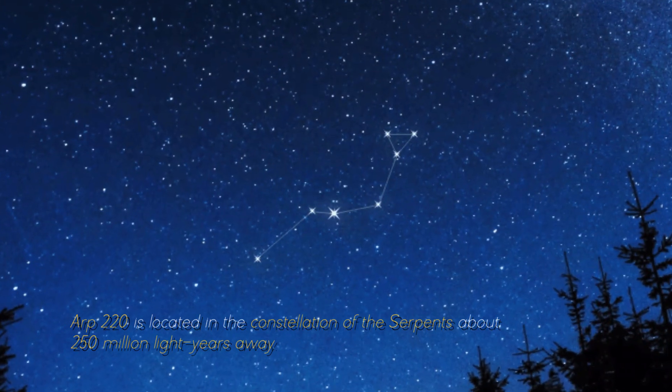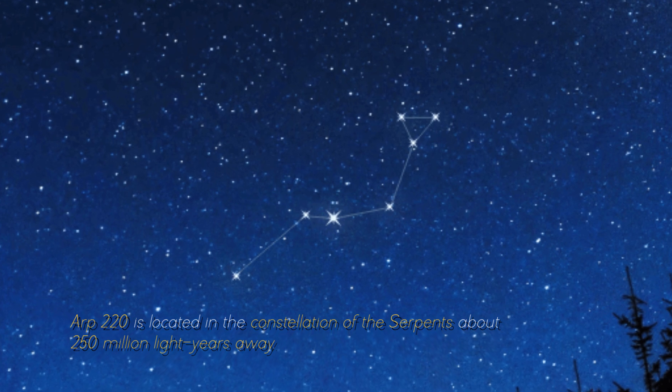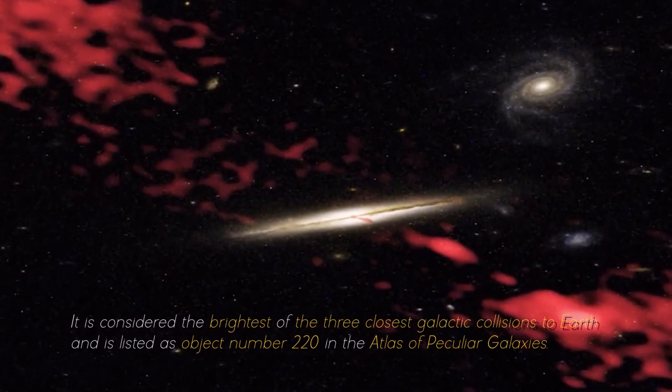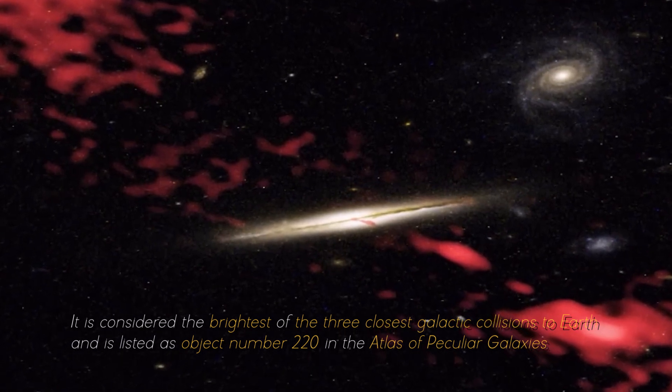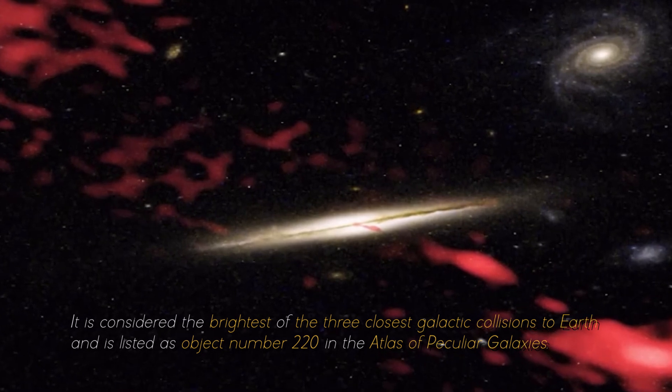ARP 220 is located in the constellation of the Serpents, about 250 million light years away. It is considered the brightest of the three closest galactic collisions to Earth, and is listed as object number 220 in the Atlas of Peculiar Galaxies.